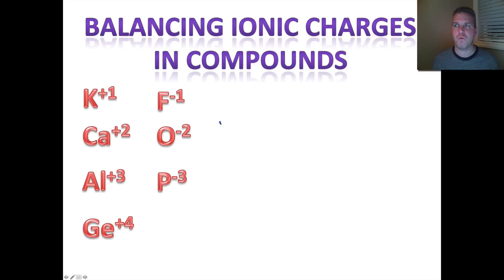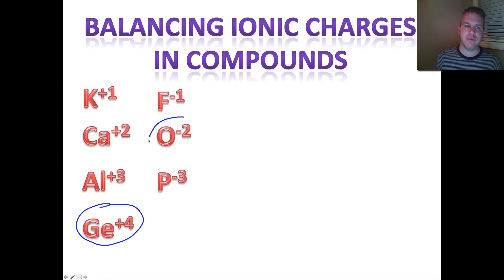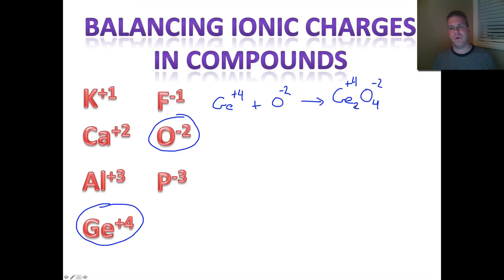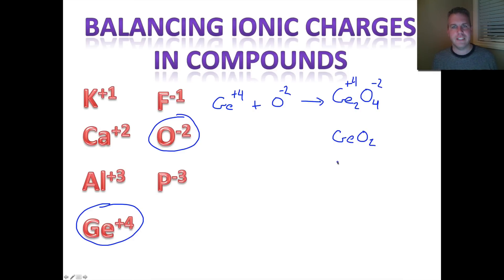The last thing to address when making an ionic compound is to ensure we include the lowest common multiple in our answer. For example, combining germanium and oxygen: Ge⁺⁴ plus O²⁻. Cross-multiplication gives Ge₂O₄. Checking: positive eight and negative eight — balanced. But I haven't finished yet. I need to reduce these numbers to the lowest common multiple, so Ge₂O₄ reduces to GeO₂.